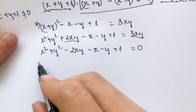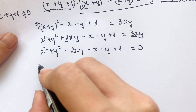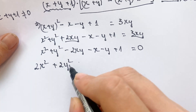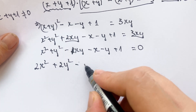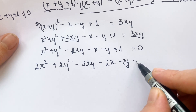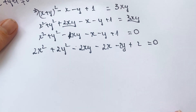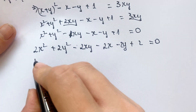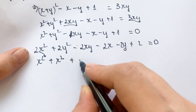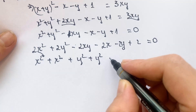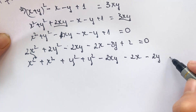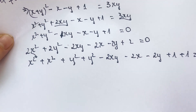For the next step, you need to multiply both sides by 2. Therefore, you can say 2x squared plus 2y squared minus 2x squared minus 2x minus 2y plus 2 equals 0. And so we can say y squared plus y squared plus y squared minus 2y squared minus 2y plus 1 plus 1 equals 0.